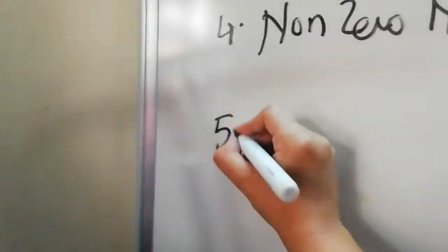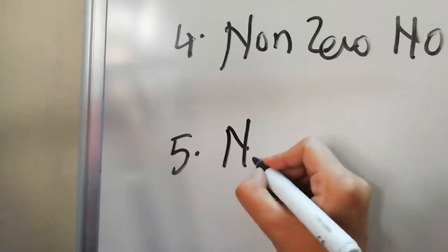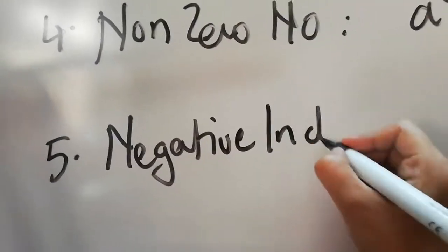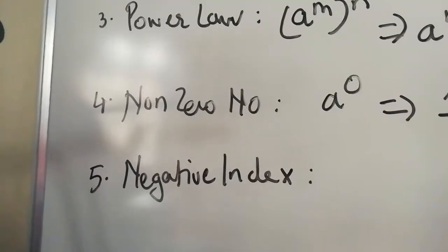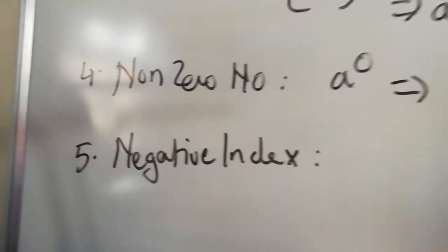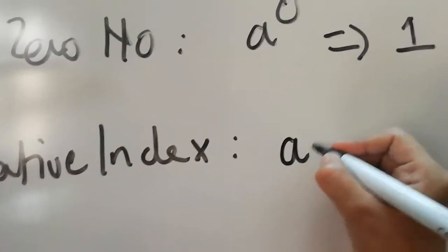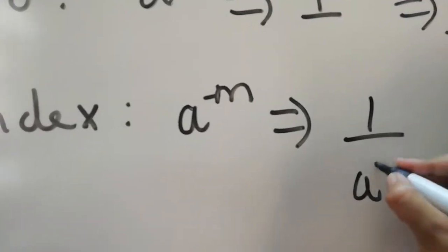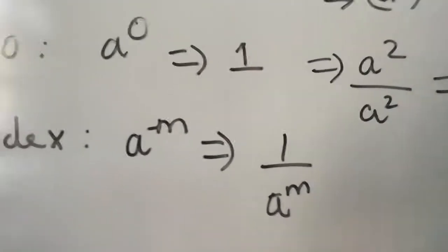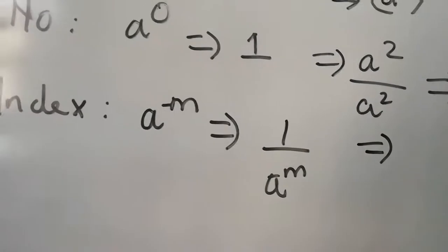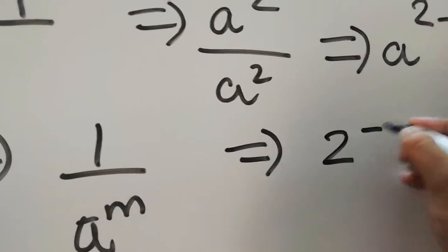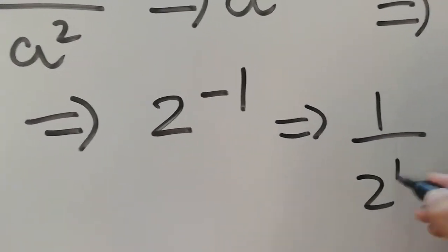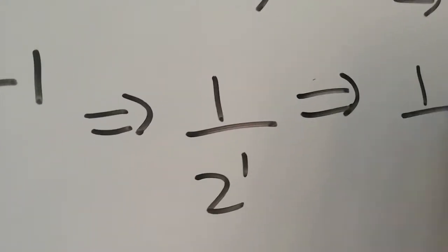The last law is called the Negative Index. If it is a raised to minus m, then your answer will be 1 upon a raised to m. For example, in the form of a number, if it is 2 raised to minus 1, then your answer is 1 upon 2 raised to 1, which is equal to half.